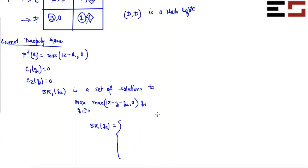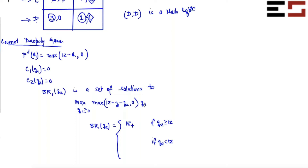I'm going to consider two cases. Case one: Q2 is greater than or equal to 12. If firm two chooses higher than 12, then no matter what you do, your revenue will always be 0 because this term will be 0. So in that case, everything is the best response.